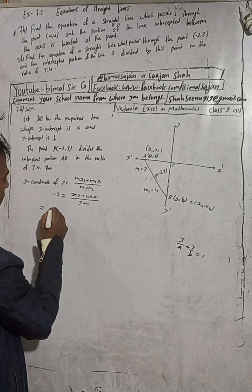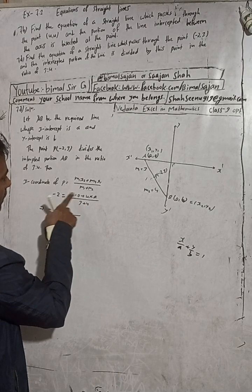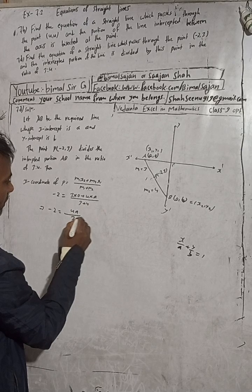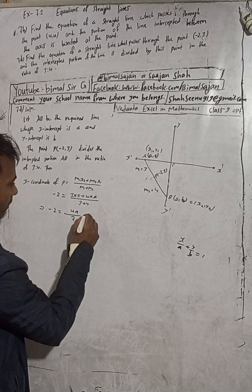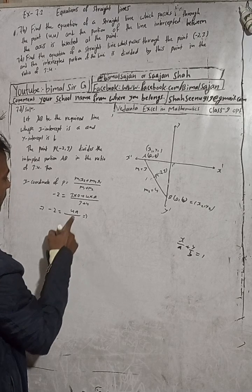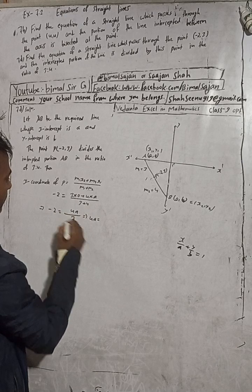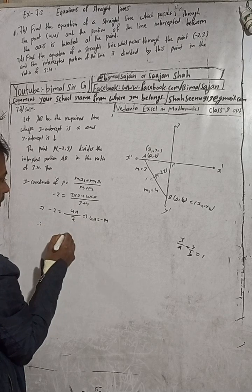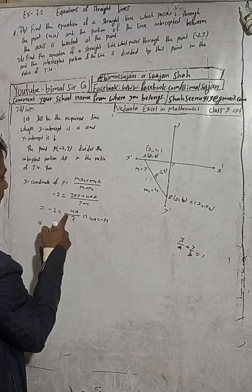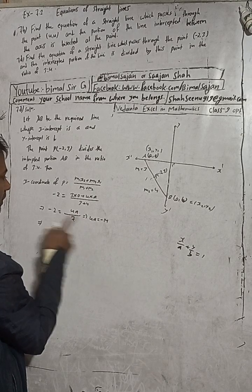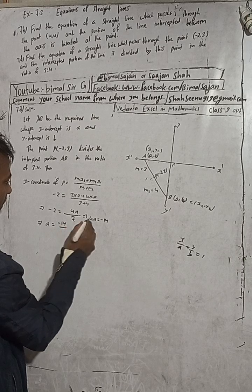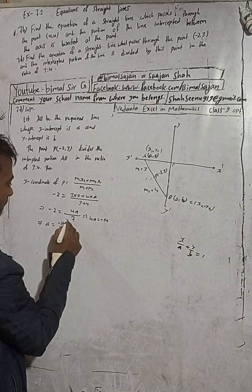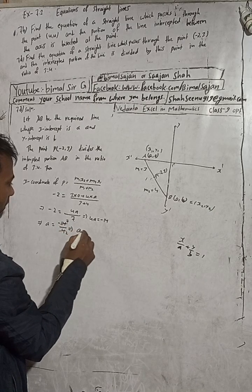Solving: minus 2 equals 3 times 0 plus 4 times a, divided by 7. So minus 2 equals 4a divided by 7. Therefore 4a equals 7 times minus 2 equals minus 14. So a equals minus 14 divided by 4, which gives a equals minus 7 by 2.